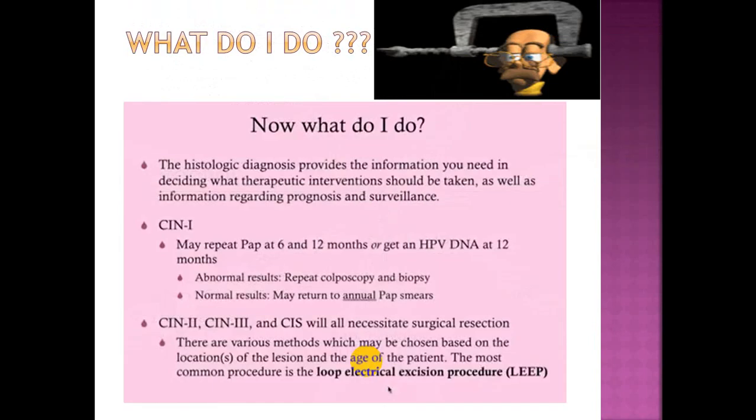After performing CIN evaluation, Pap smear, HPV DNA testing, and colposcopic biopsy, the histologic diagnosis provides the information needed for therapeutic intervention and prognosis. CIN 1 may have Pap repeated at 6 and 12 months, or HPV DNA testing at 12 months. Abnormal results require repeat colposcopy and biopsy; normal results may return to annual Pap. CIN 2, CIN 3, and carcinoma in situ all necessitate surgical resection. Various methods may be chosen based on the location of the lesion and age of the patient; the most common procedure is the loop electrosurgical excision or LEEP excision.